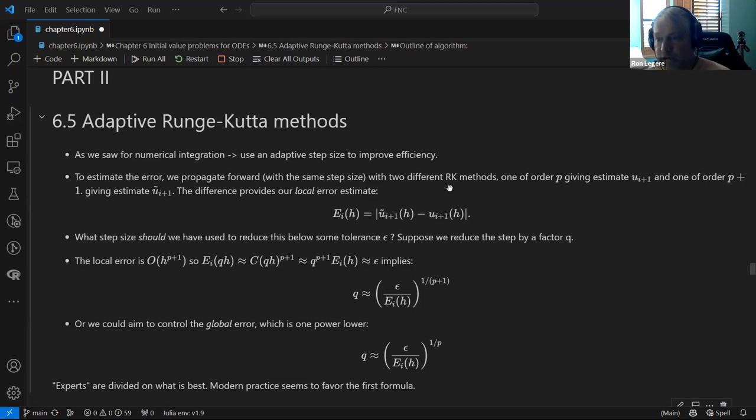The way it works is you estimate, you take a step size, and similar to what we did before with adaptive integration, we want to estimate the error somehow. In this case, we can do that by taking a step at a fixed step size, take a step with two algorithms of different order, and use the difference between those results to estimate the error.